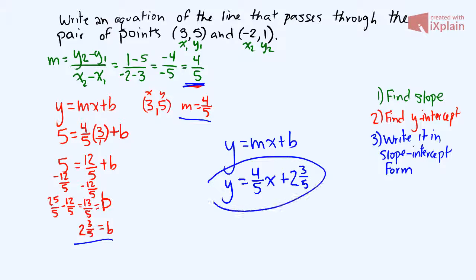And so here is the equation for the line that passes through the pair of points (3,5) and (-2,1).